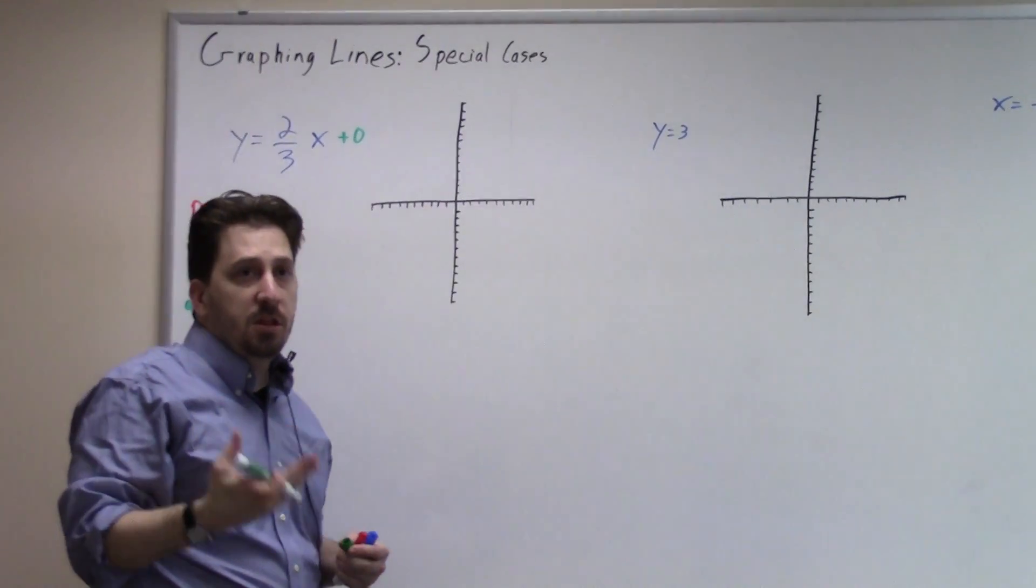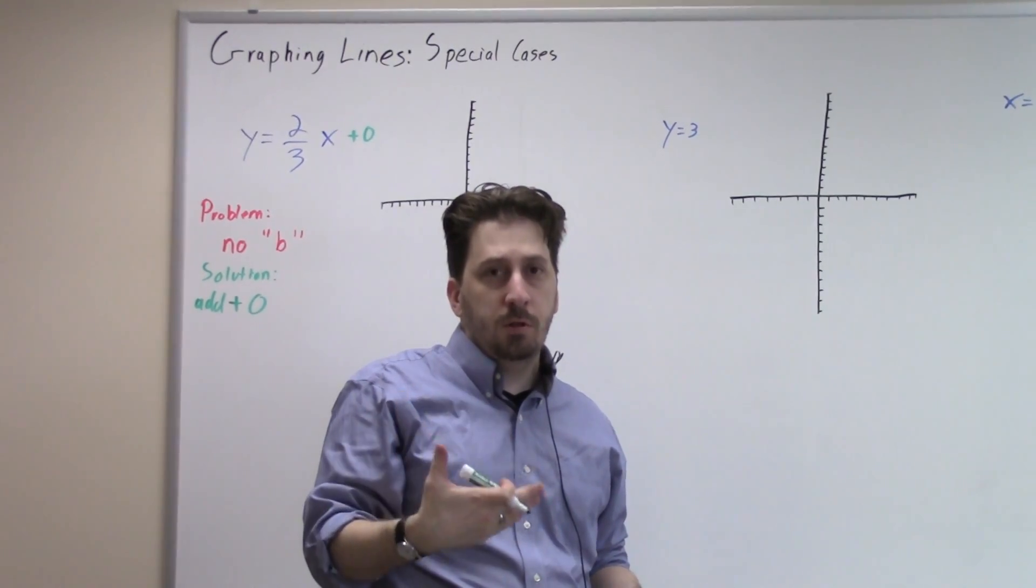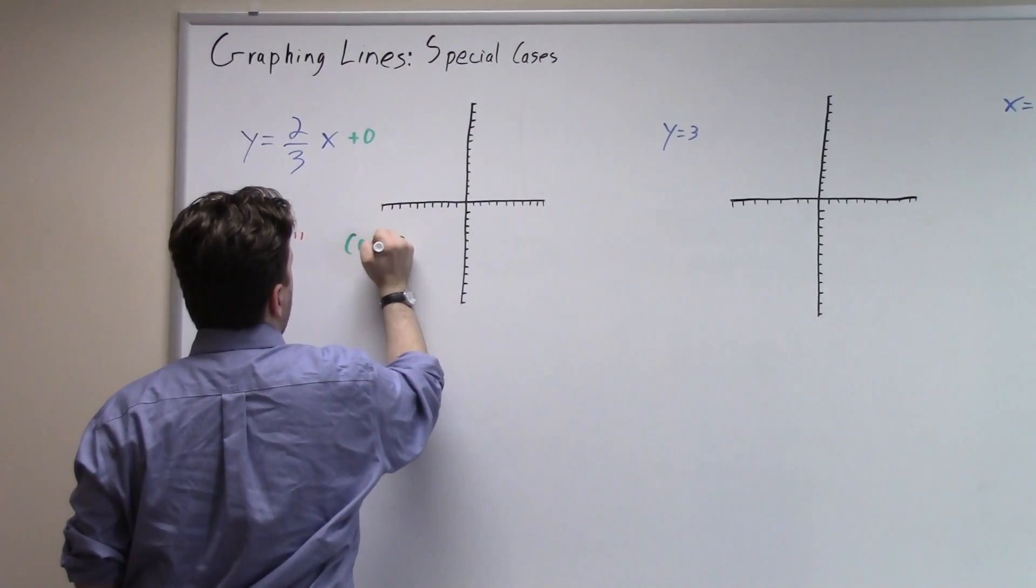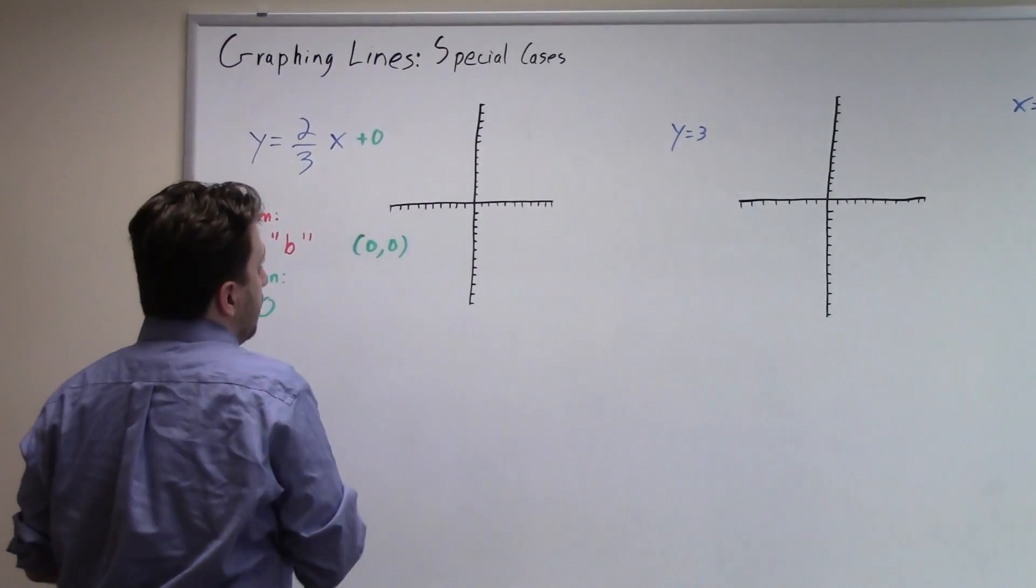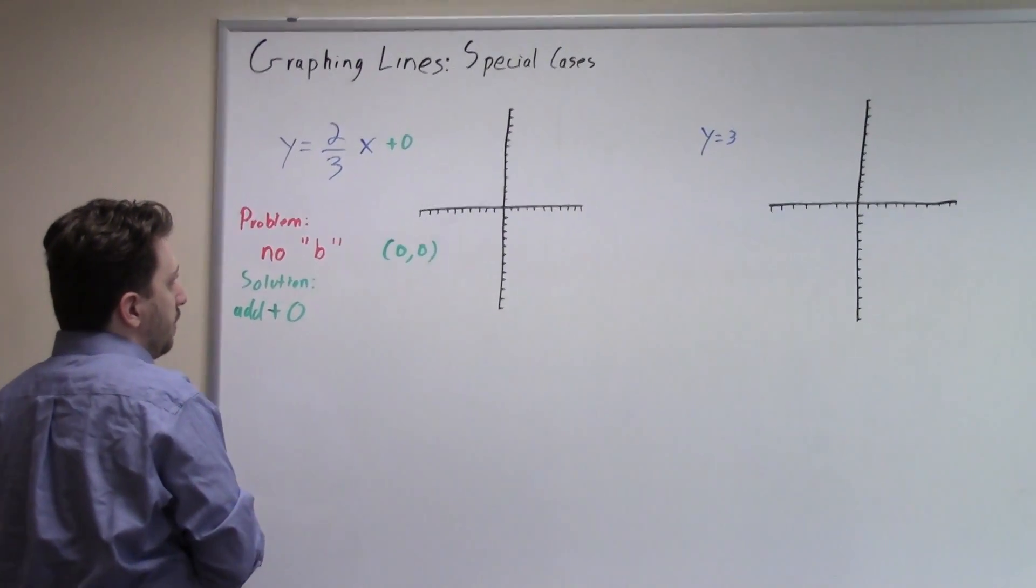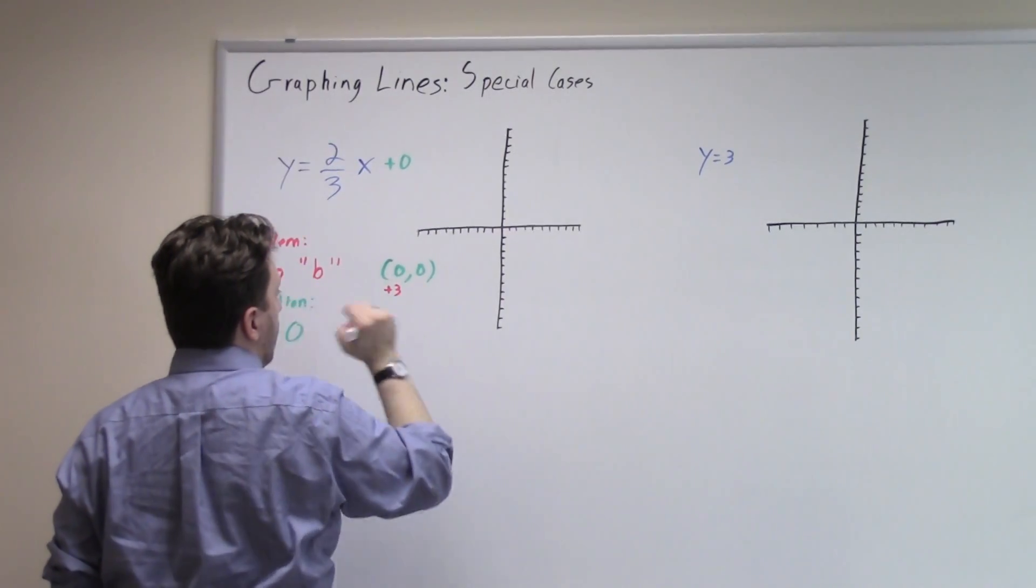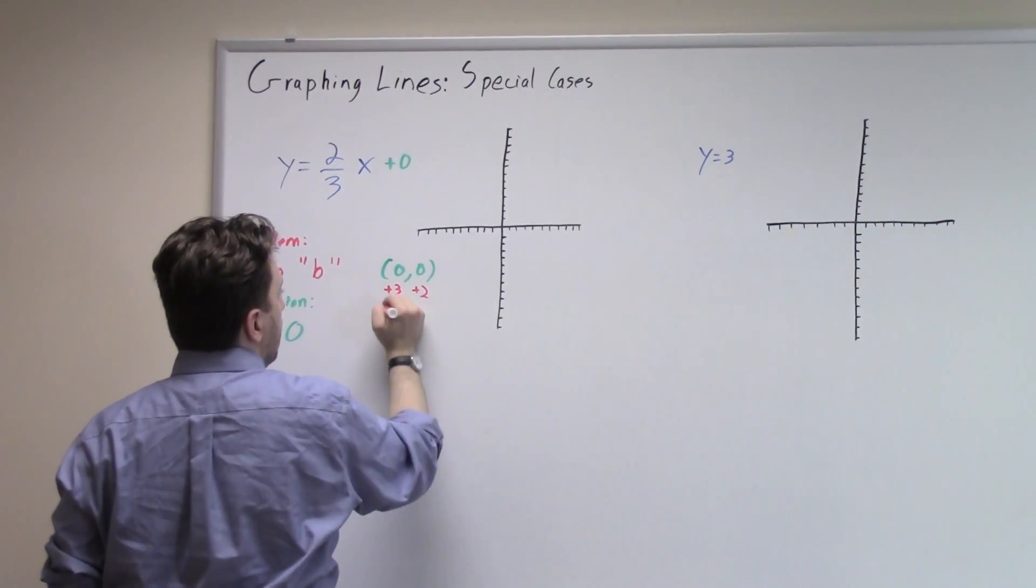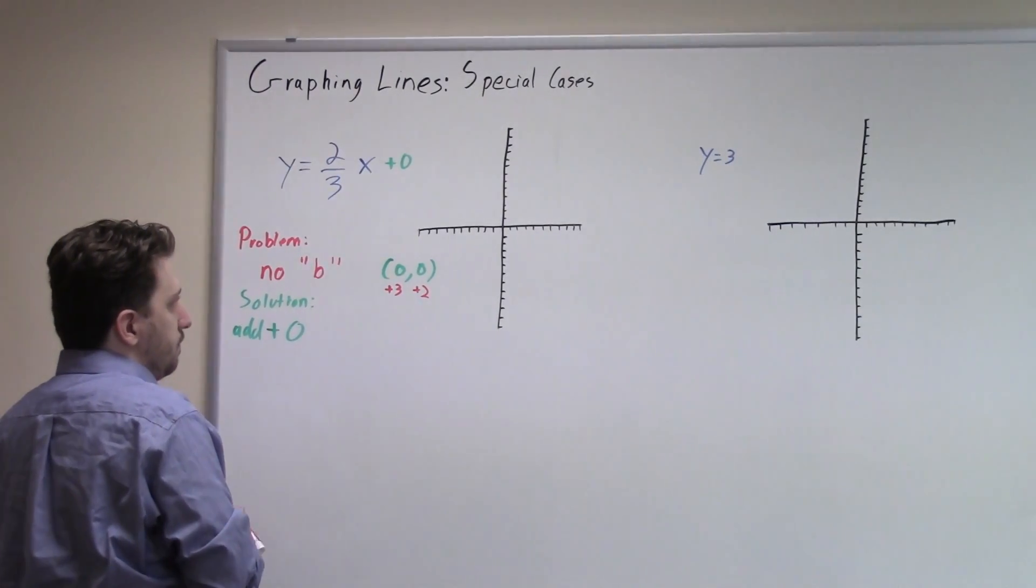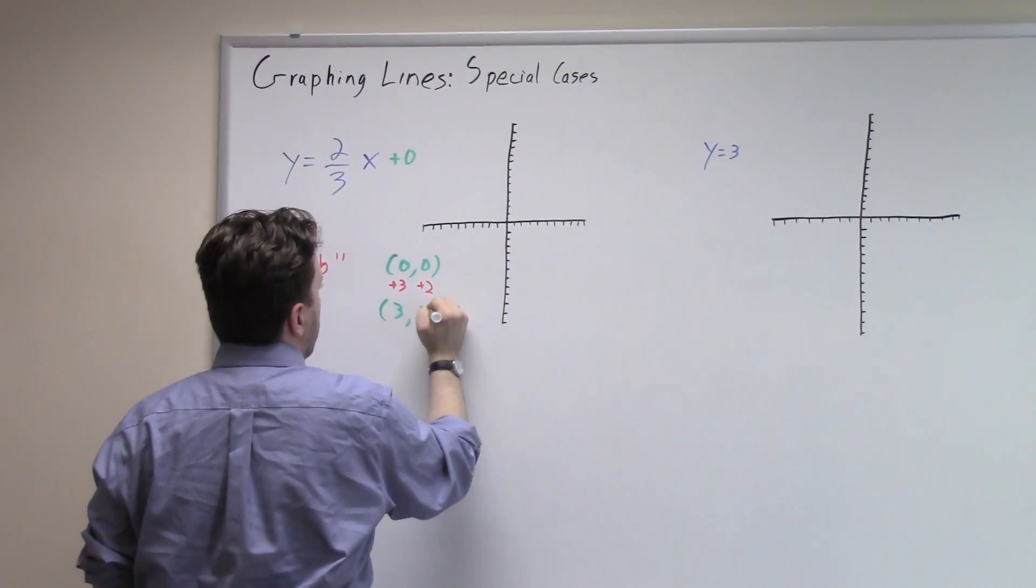Now that I see that plus zero there, I can tell that my y-intercept is going to be at the point zero, zero. Then I look at my slope. My bottom number is three, so I want to add that to my x-coordinate. My top number is two. I want to add that to my y-coordinate. That's going to give me my second point, which is three, comma, two.